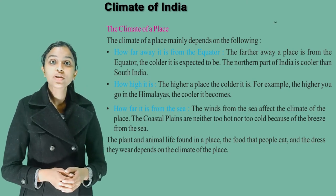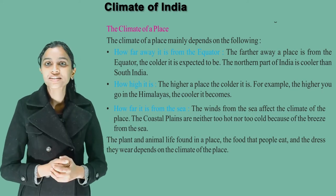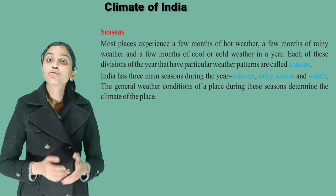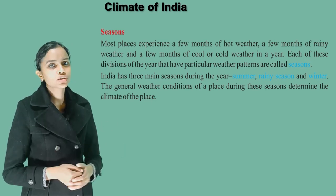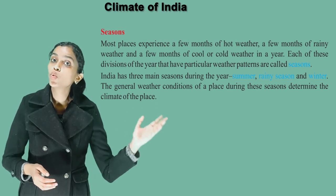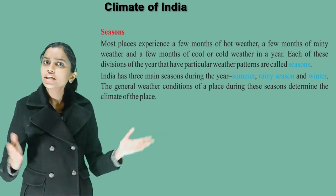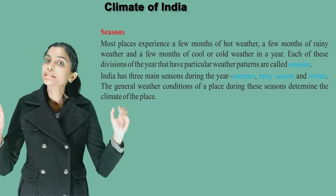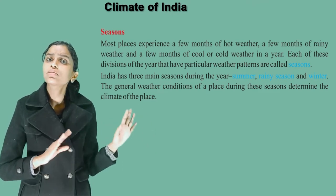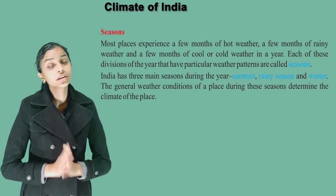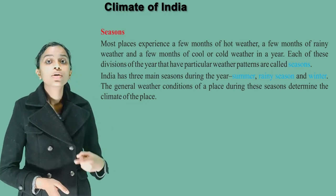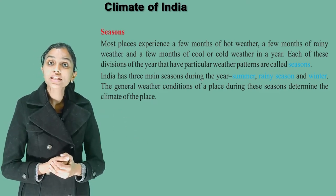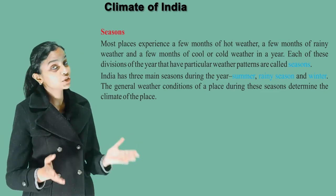The food that people eat and the dress they wear depends on the climate of the place. Most places experience a few months of hot weather, a few months of rainy weather and a few months of cool or cold weather in a year. Each of these divisions of the year that have particular weather patterns are called seasons. India has three main seasons: summer, rainy season and winter.